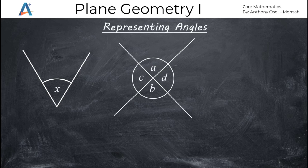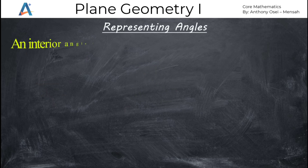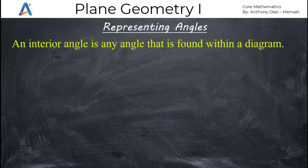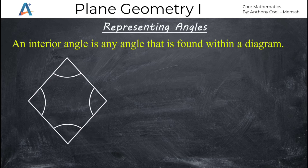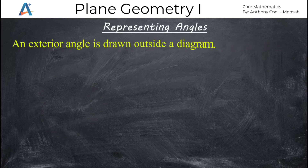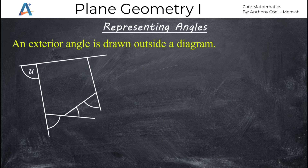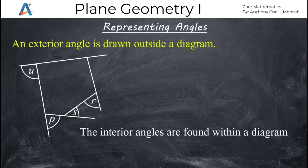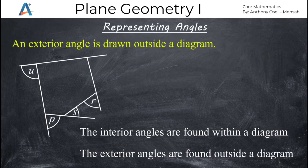Let us now look at interior and exterior angles. An interior angle is any angle that is found within a diagram. If I draw a diagram and get angle A, angle B, angle C, and angle D — all these angles are within the diagram — so angles A, B, C, and D are referred to as interior angles. Exterior angles are angles that are found outside the diagram. If angle U, angle P, angle S, and angle R are found outside the diagram, they are called exterior angles. The interior are found within the diagram, and the exterior are found outside the diagram.